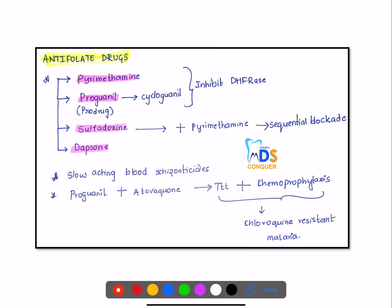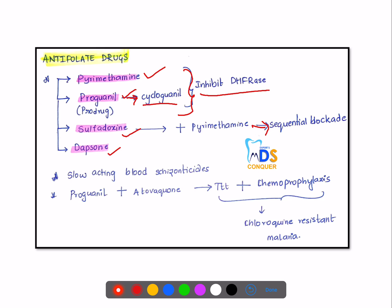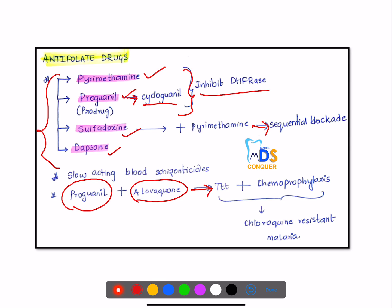There are four antifolate drugs: pyrimethamine, proguanil, sulfadoxine, and dapsone. Proguanil is a prodrug and cycloguanil is its active form. Both pyrimethamine and proguanil inhibit DHFR. Sulfadoxine plus pyrimethamine causes sequential blockade. These are slow-acting blood schizonticidal drugs. When proguanil is combined with atovaquone, it can be used both for treatment and chemoprophylaxis of chloroquine-resistant malaria.